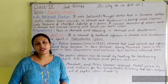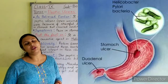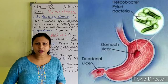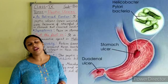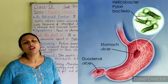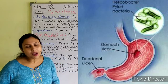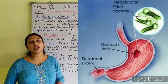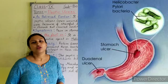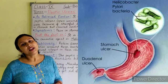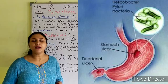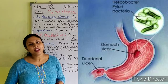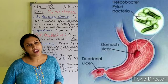Observe this diagram carefully. You can see the bacteria Helicobacter pylori. It is causing the stomach ulcer and the duodenum ulcer, which is commonly known as peptic ulcer, as you can see in the diagram.